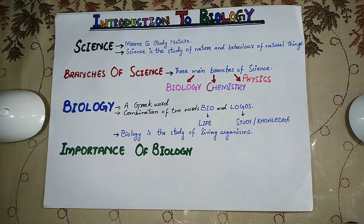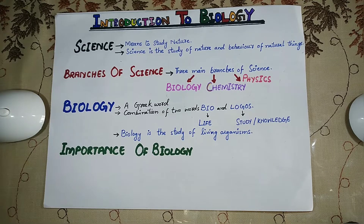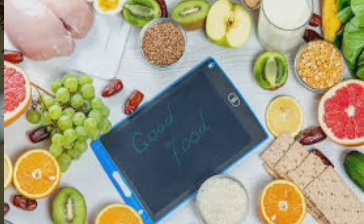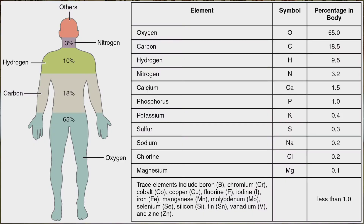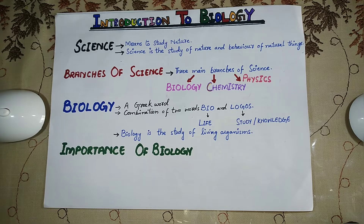If we see the world around us, we have a lot of creatures — from tiny microscopic organisms like bacteria to highly complex organisms like human beings. In biology, we study how living organisms get their energy and food, how they move, how they grow, and what they are made of. In short, it is the field of science in which we learn about different and various aspects of life.